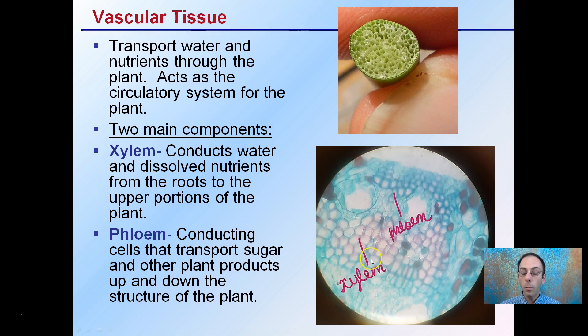To summarize: xylem moves water only in the upward direction, while phloem moves food up and down and throughout the plant.